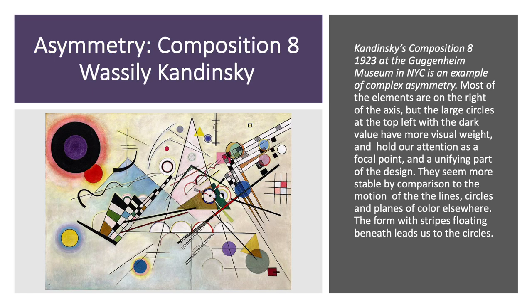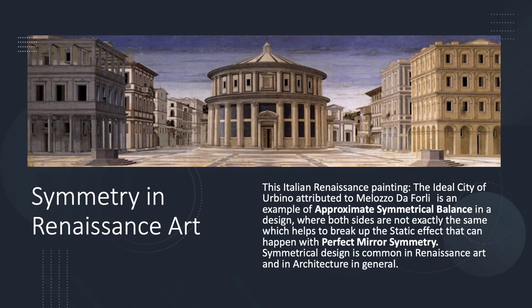In this painting by Kandinsky we have a complex asymmetrical design. Almost everything is happening on the right-hand side, but the focal point becomes that group of circles with the darker value up at the top left, and then they lead us back into the composition with the striped form below and back into the more active part of the design. In this Italian Renaissance work we see use of symmetry, a painting of the ideal city of Urbino, with what's called approximate symmetry — things are not exactly the same on either side of the dividing line, which helps alleviate the static quality that can sometimes come with symmetrical designs.